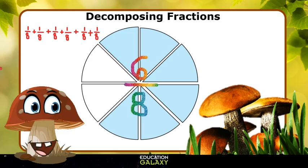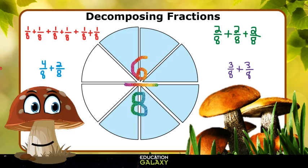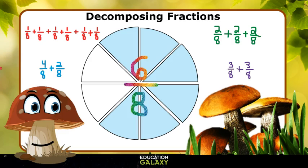Or, we could break it into 4 eighths plus 2 eighths, which is also 6 eighths. Or, 2 eighths plus 2 eighths plus 2 eighths, also 6 eighths. Or, 3 eighths plus 3 eighths equals 6 eighths again! So it doesn't matter how we group them as long as our total is 6 of the eighth slices, giving us a fraction of 6 eighths.